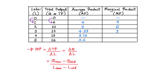The total output increases from 13 to 15 when the amount of labor used increases from 3 to 4. To calculate this marginal product, we say 15 minus 13 divided by 4 minus 3, and that gives us 2. When total output increases from 15 to 16 and total units of labor increase from 4 to 5, we have 16 minus 15 which is 1, divided by 5 minus 4 which is 1 — giving us 1 divided by 1 equals 1.